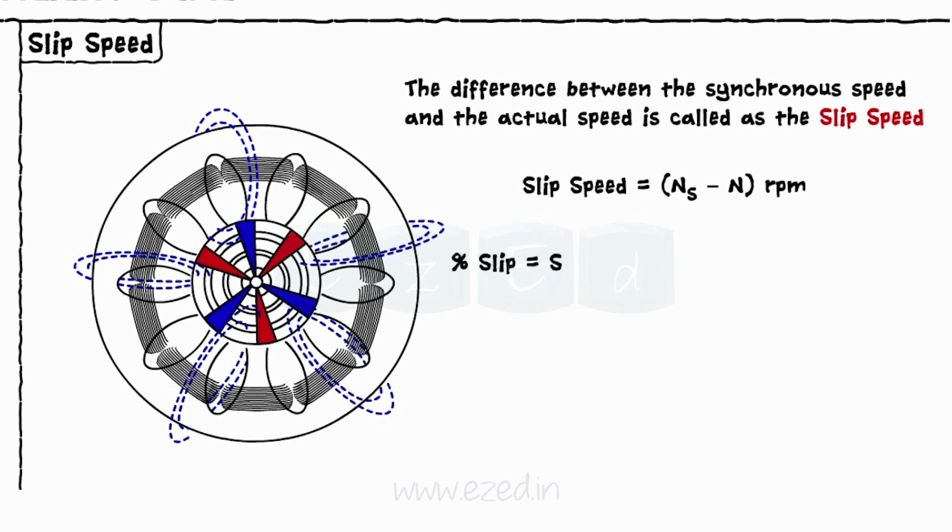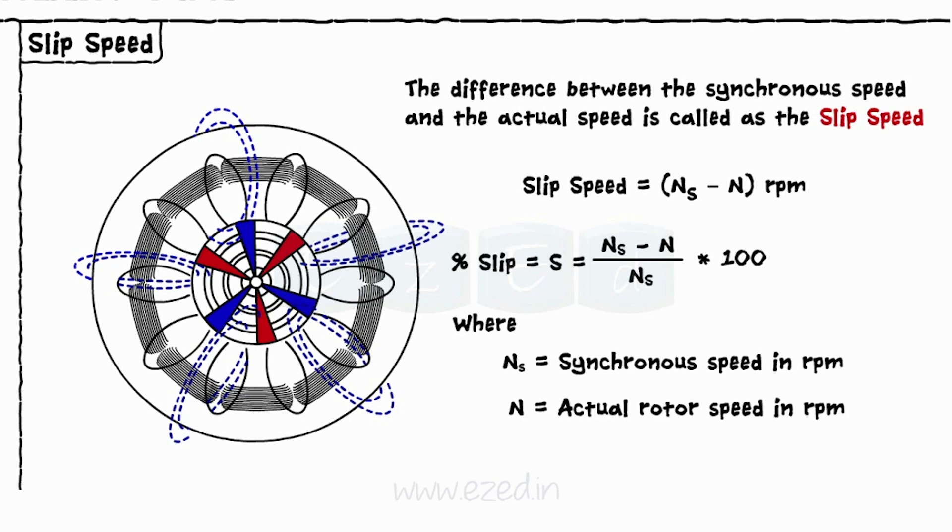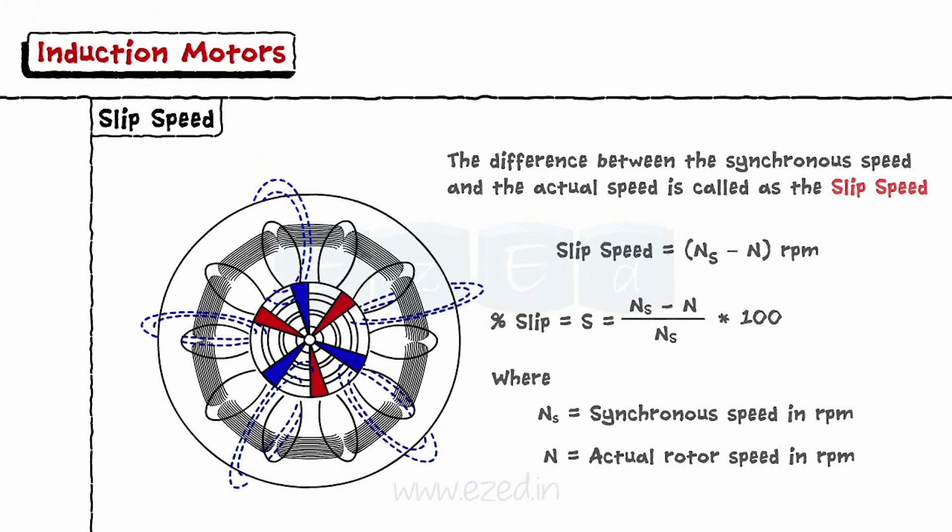It is given as percentage slip equals ns minus n upon ns into 100, where ns equals synchronous speed and n equals actual rotation speed of motor measured in rotations per minute.